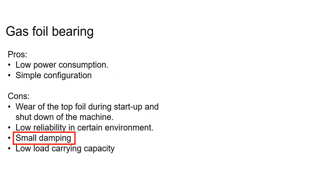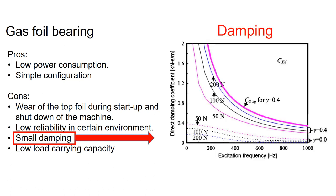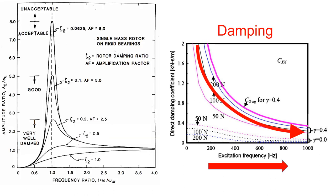The disadvantage of gas foil bearing is that they have small damping. Typically, the damping coefficient decreases with increasing excitation frequency. Damping is needed especially when the machine crosses the critical speed, because high damping can suppress the rotor motion when crossing the critical speed.